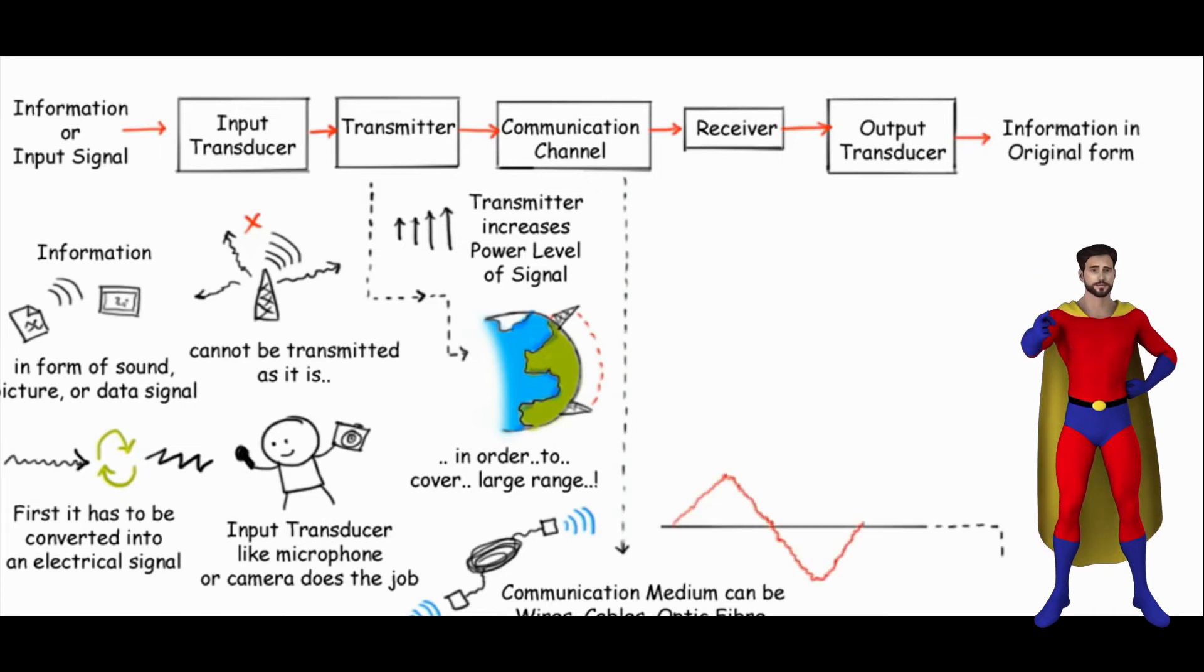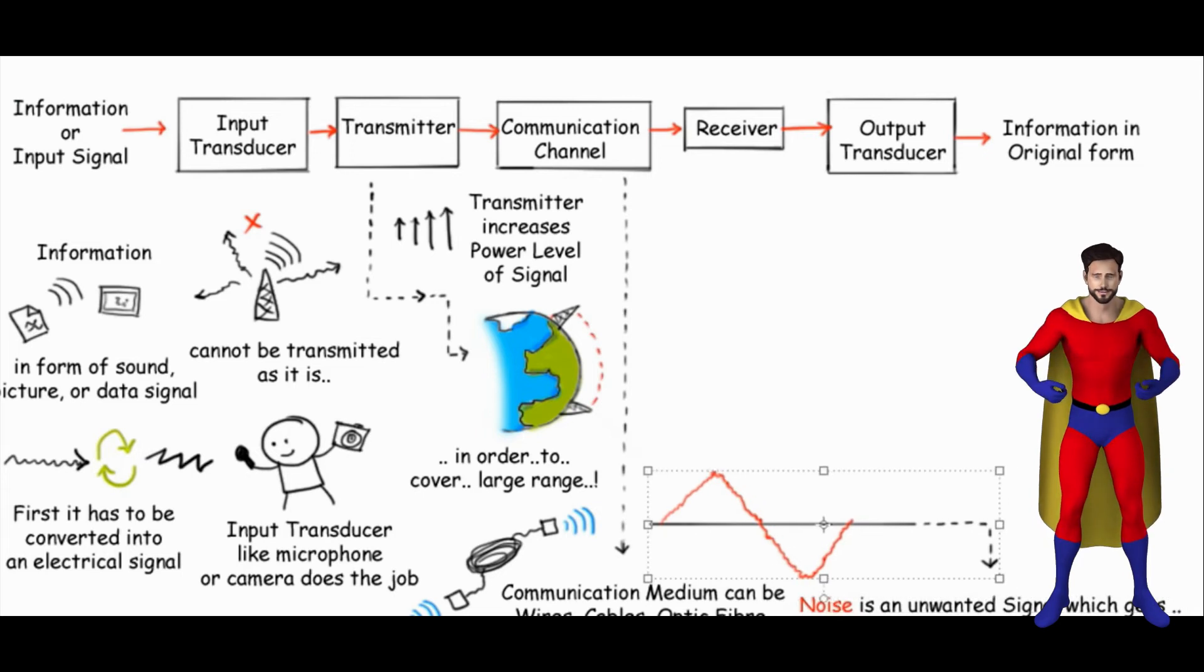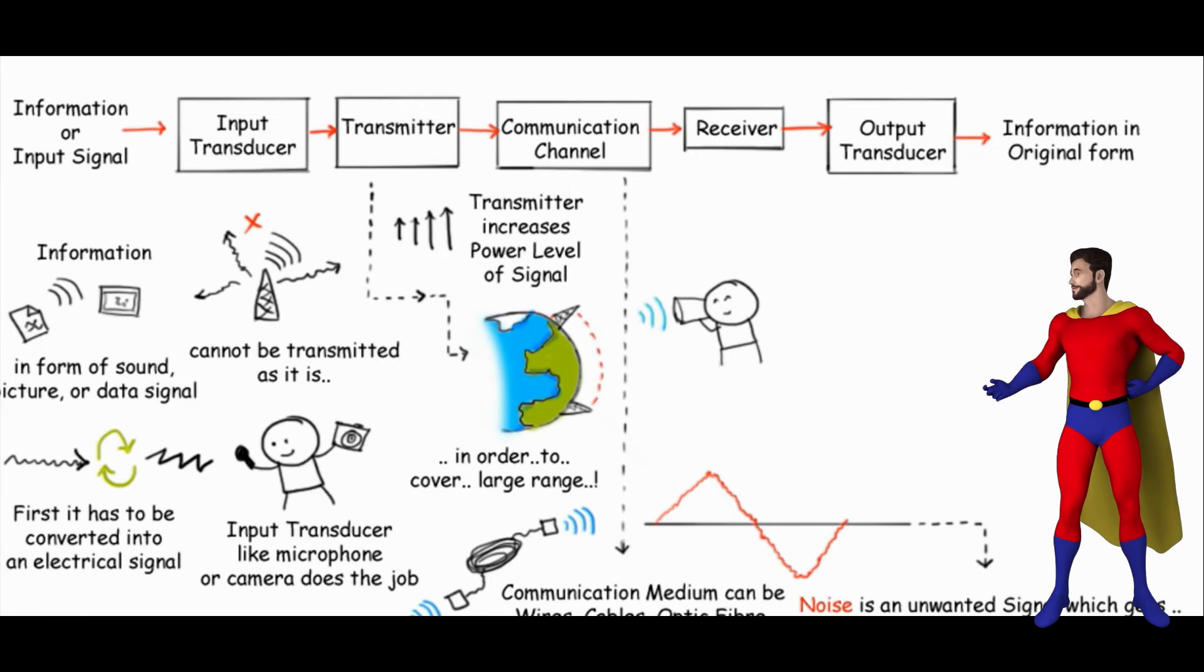Lesson 11 consists of Inter-Symbol Interference and Raised-Cosine Pulse Shaping Filter. Lesson 12 includes Correlative Level Duo Binary Coding for Doubling Channel Capacity. Lesson 13 includes Addressing the Drawbacks of Correlative Level Duo Binary Coding.